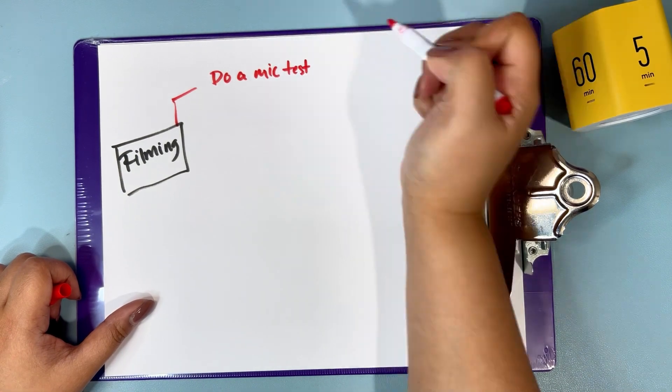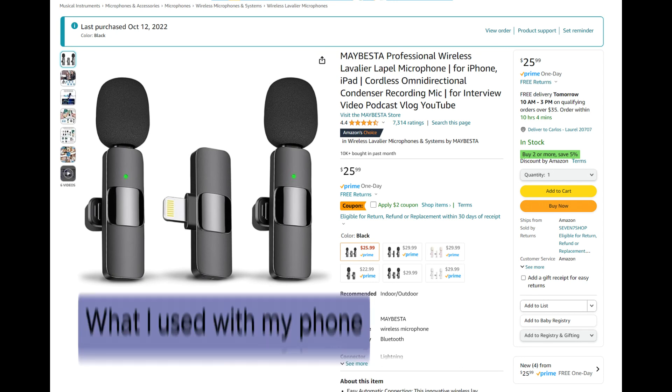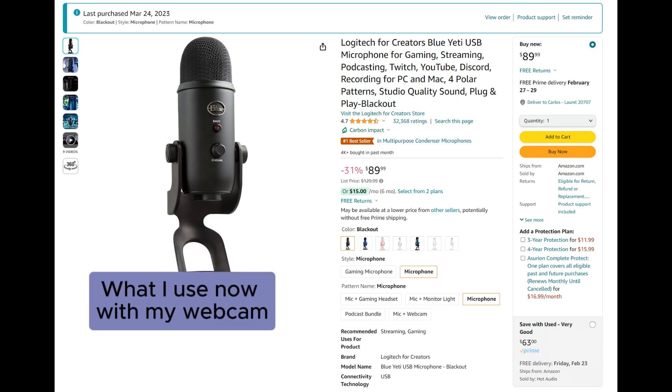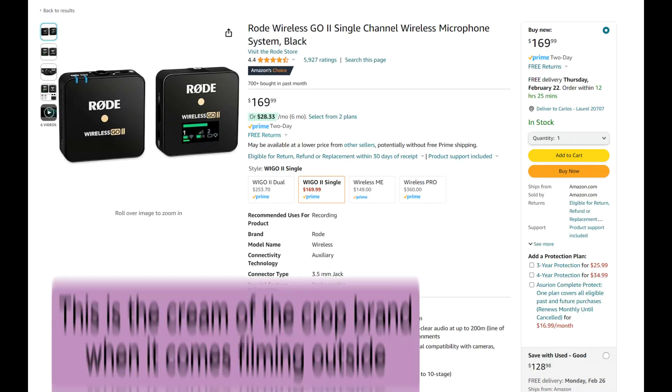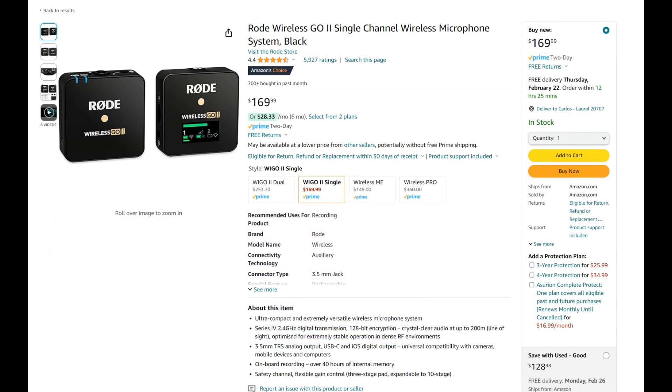The most important equipment for making a YouTube video is actually the microphone. People can tolerate pixelated or dark videos, but not bad sound. For example, I watched a YouTube video of a guy giving tours in the Philippines. He was outside with wind and traffic noise and I couldn't hear what he was saying. Needless to say, I stopped watching the video.